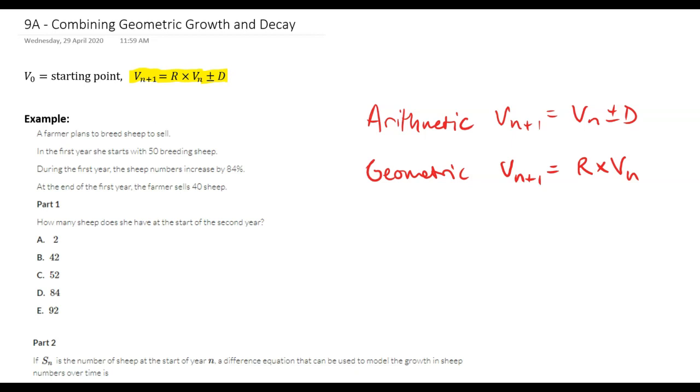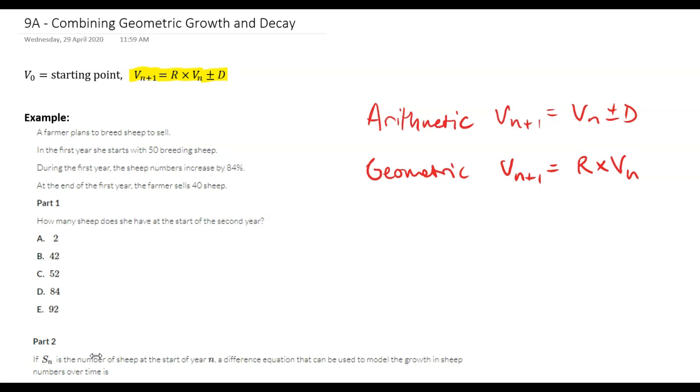This is like the first order recurrence relations that we looked at. They call this geometric growth and decay. For decay we're going to be minusing d every time, so we're timesing by r and then minusing d every time to get vn.